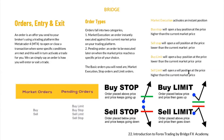Sell limit: we open a sell position at a price higher than the current market price. When the market price goes to that point and can no longer go higher — it has hit a resistance — it will start selling at the bounce. To summarize: limit orders are buy and sell bounces, and stop orders are buy and sell breaks.